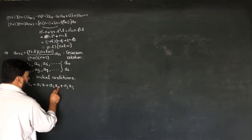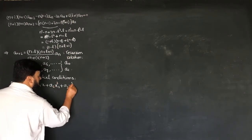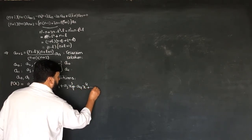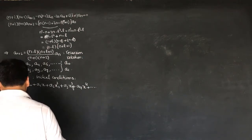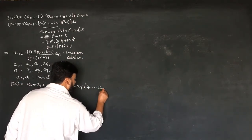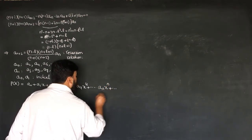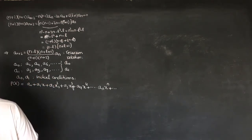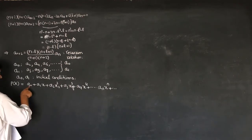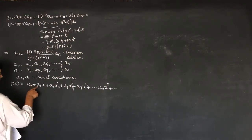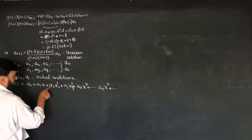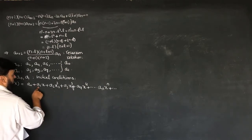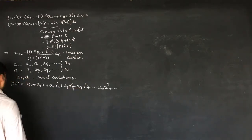...plus a_1 x, plus a_2 x^2, plus a_3 x^3, plus a_4 x^4, and so on, up to a_n x^n and further terms. We have already found a_2 in terms of a_0, a_3 in terms of a_1, a_4 in terms of a_0, and so on.